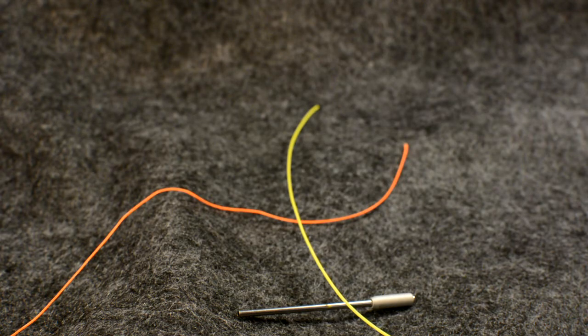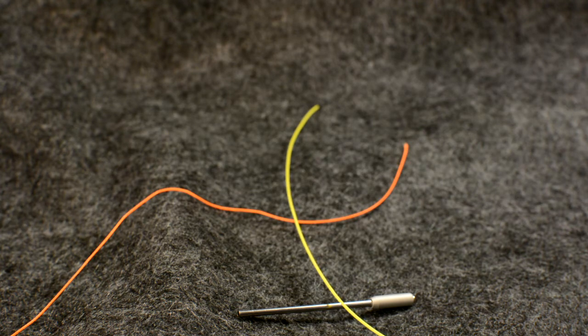The nail knot is the traditional way to attach the fly line to leader or butt section or fly line to backing.